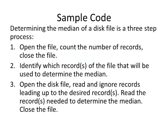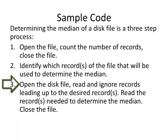Here's some sample code. To determine the median, it's a three-step process: open the file, count the number of records, and close the file. Then identify which record will be used to determine the median. Open the disk file again, read and ignore the records leading up to the desired record — skipping over those — and then read that record. If I need an even count, I read two records and take the average.